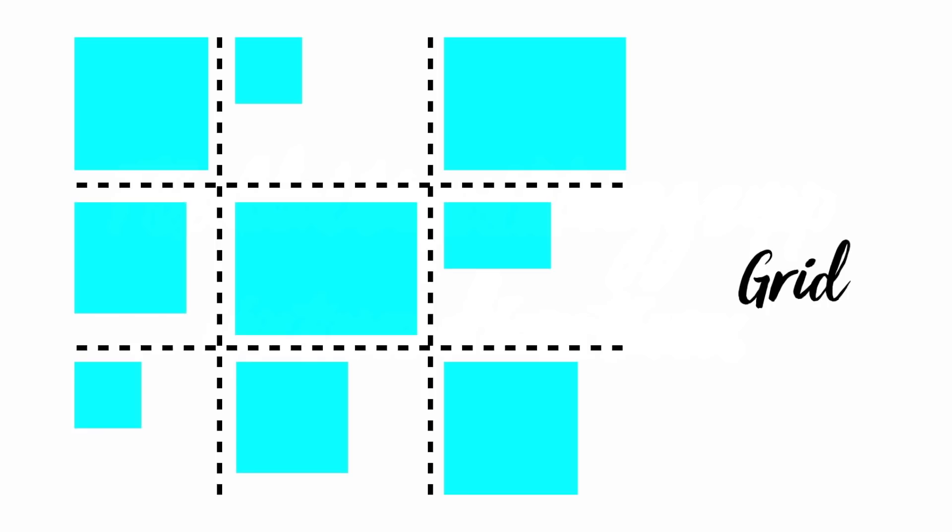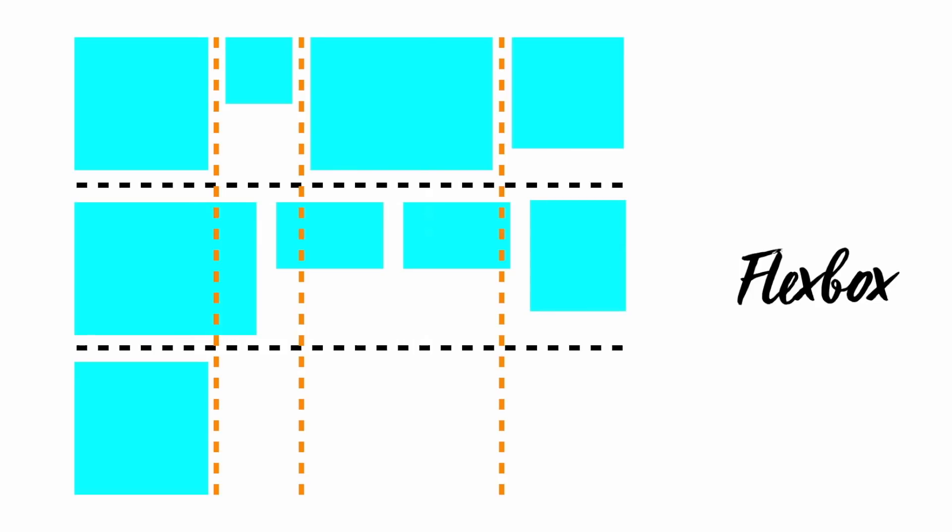Grid has the ability to line things up in two directions, and in fact Grid always wants to line things up in two directions. You can't get it to stagger things — it thinks about rows and columns at the same time, and it's going to want to make adjustments based on what's going on in both directions simultaneously. Here's a diagram of a layout you would do with Grid where things actually line up in both directions, and here's a diagram of how things might work in Flexbox, where calculations are done in each row one at a time with no regard to the other rows. You can see that those things don't actually line up.